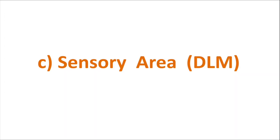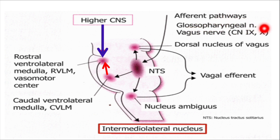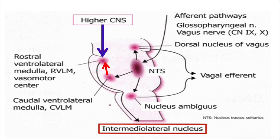The last component is the sensory area or dorsolateral medulla (DLM), present bilaterally in the nucleus of tractus solitarius. It receives information about the circulatory state of the body through the ninth and tenth cranial nerves, as shown in the figure. Output from the nucleus of tractus solitarius is given to the CVLM and RVLM, which accordingly send impulses to blood vessels to regulate the circulatory state.